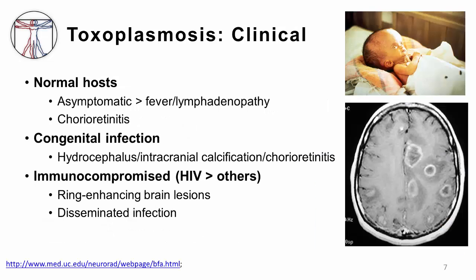Clinically, normal hosts who get infected most often have absolutely no signs and symptoms. However, if they do have clinical disease, it is usually fever and diffuse lymphadenopathy. I had a patient recently who returned from a prolonged trip to Italy where he was eating a lot of undercooked meat and came in with fever and diffuse lymphadenopathy — we diagnosed him with acute toxoplasmosis infection.